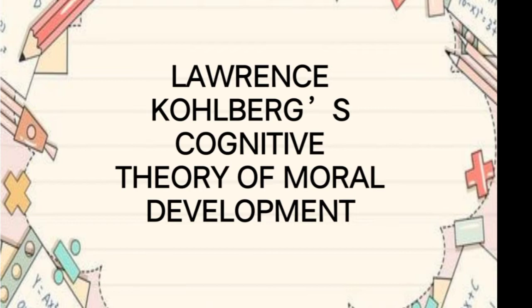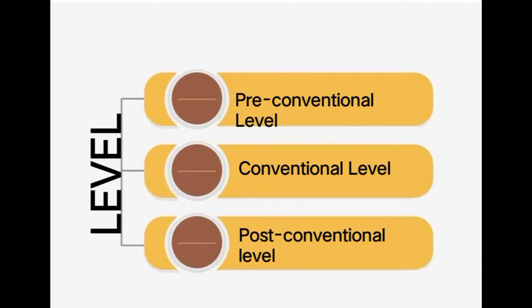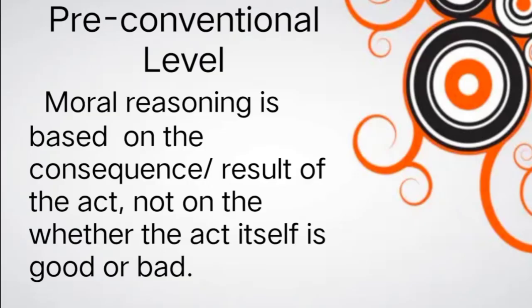According to Kohlberg's Cognitive Theory of Moral Development, there are three levels of moral development: 1. Pre-conventional level, 2. Conventional level, and 3. Post-conventional level.